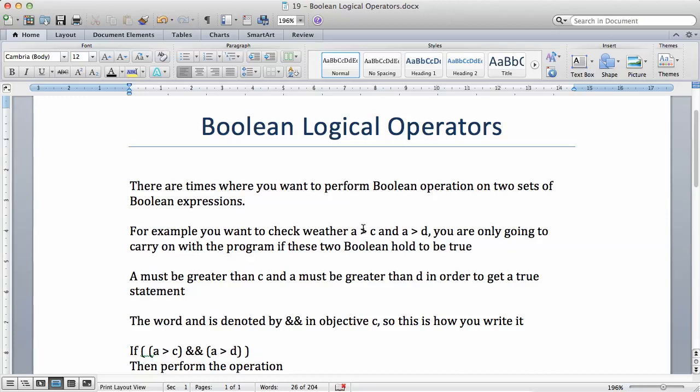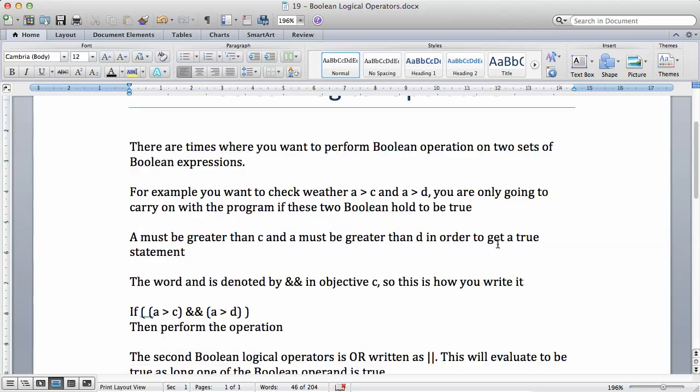So you want to check, you want to carry on the execution of your program only if these conditions are true. If a is greater than c and a is greater than d, there's only time you want the program to continue. So you are only going to carry on with the program if these two Booleans hold to be true. A must be greater than c and a must be greater than d in order to get a true statement.